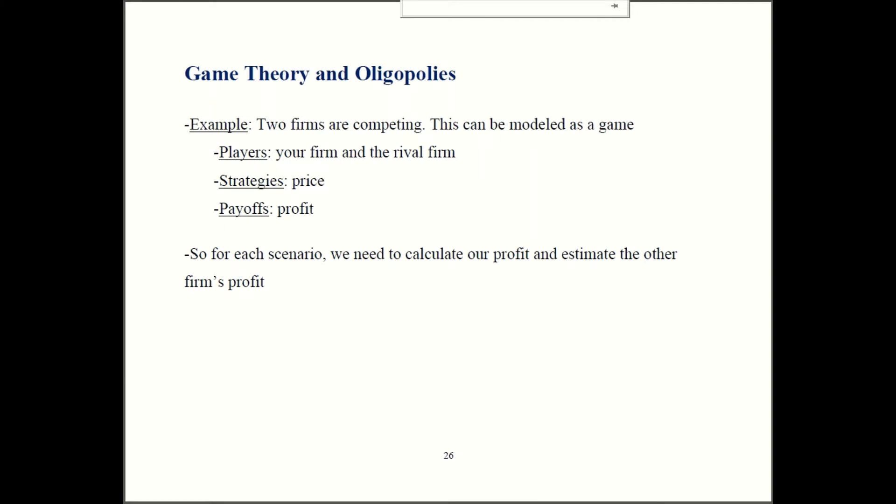So let's look at we have two firms in competition. The tools of game theory apply. In game theory you have to have three elements: players (in this case two firms, your firm and the competing firm), strategies, and payoffs. So strategies are the actions the participants can choose. In this case the firms are picking price when they are competing with each other. The payoffs are going to be the profit, the outcome of the game.